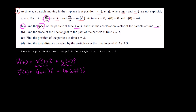That is our velocity vector as a function of time. So what is our velocity vector at time t equals 3? We just have to substitute 3 for t. So 4 times 3 plus 1 is 13i, plus sine of 3 squared — which is sine of 9 — plus sine of 9j. Our speed, what they want us to figure out, is going to be equal to — our speed at time 3.